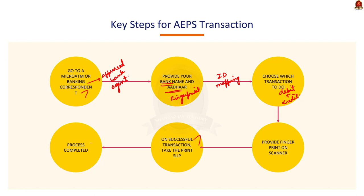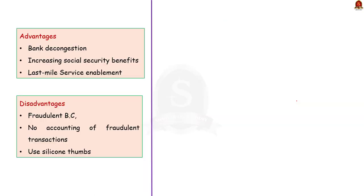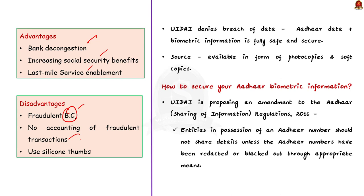To put it simply, AEPS removes the need for OTPs, bank accounts and other financial details, allowing fund transfers using only the bank name, Aadhaar number, and fingerprint captured during Aadhaar enrolment. There are two forms of payment services under AEPS: the first facilitates crediting money into beneficiary accounts, while the second enables account holders to withdraw cash. AEPS has advantages like bank decongestion, increasing social security benefits, and last-mile service enablement; however, it also has disadvantages like fraudulent business correspondents and no accounting of fraudulent transactions. Cyber criminals have now begun using silicon thumbs to operate biometric POS devices and biometric ATMs to drain users' bank accounts.